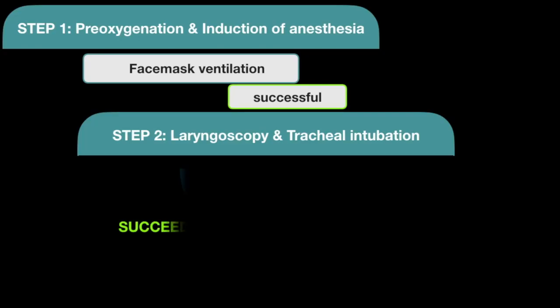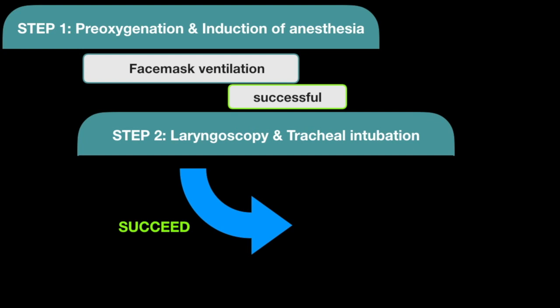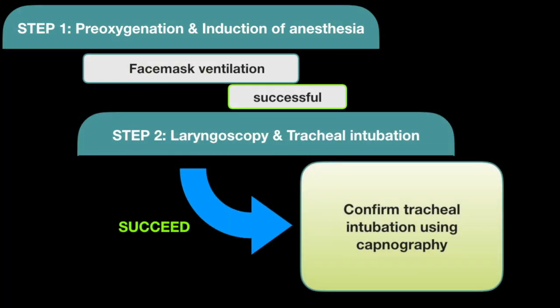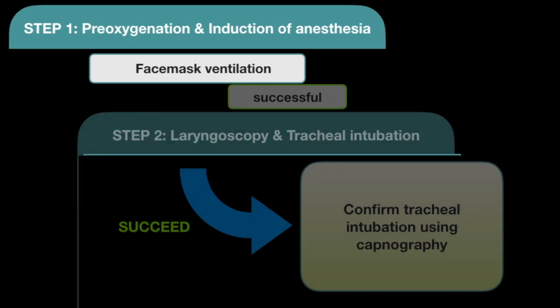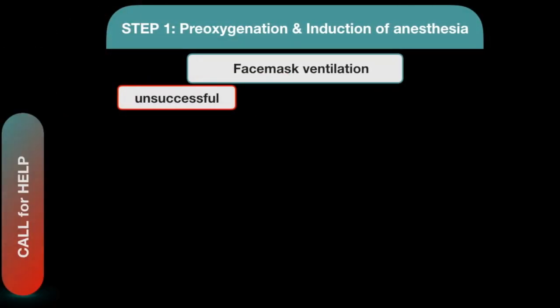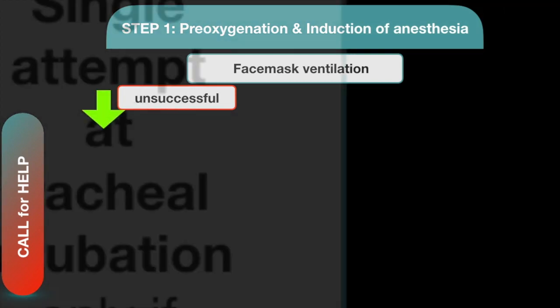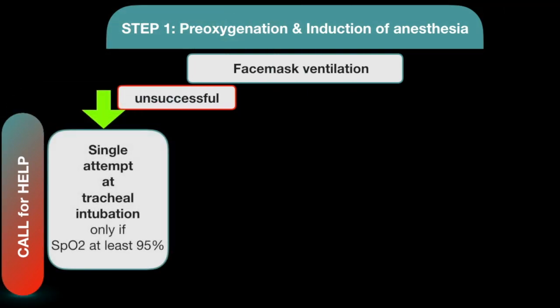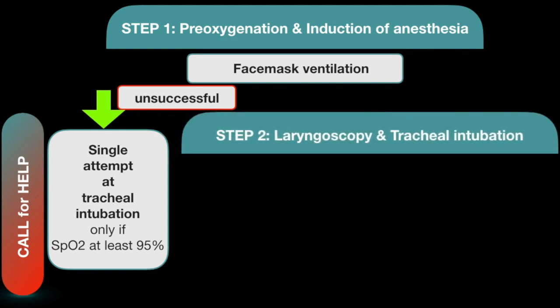After intubation, confirm proper endotracheal tube position using capnography along with clinical methods. If mask ventilation is not possible, immediately call for help. A single attempt at intubation could be made provided the saturation is above 95%. Once successful, confirm tracheal intubation using capnography and clinical methods.